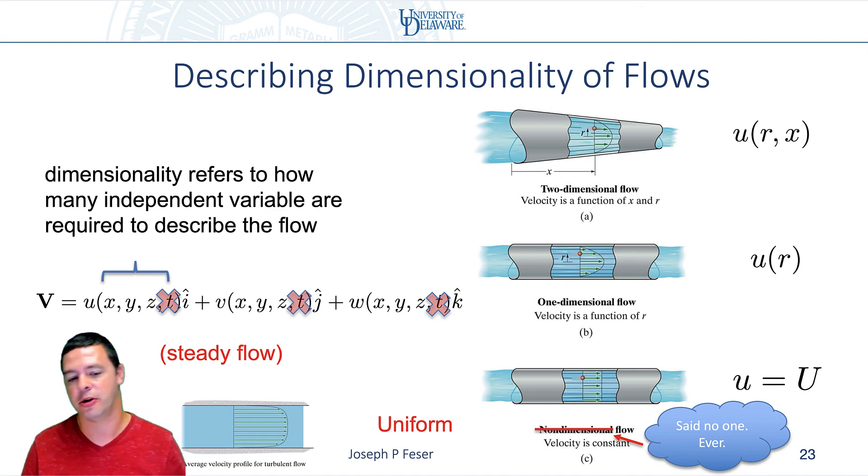And so, to a good approximation, even inside of a pipe, if you have turbulent flow, people will often treat that as a uniform flow, even though it's definitely not.